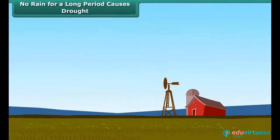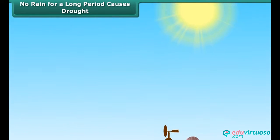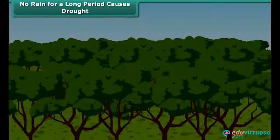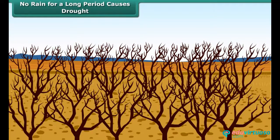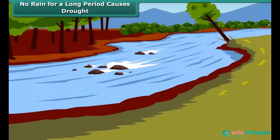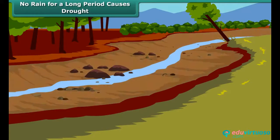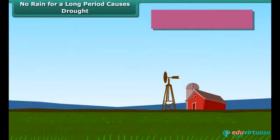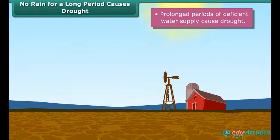Have you ever thought about what will happen if it does not rain for a very long period? When it does not rain for a very long period, the soil continuously loses water by evaporation and transpiration. The level of water in ponds and wells goes down and some water bodies dry up. The groundwater also depletes. Prolonged periods of deficient water supply cause drought.